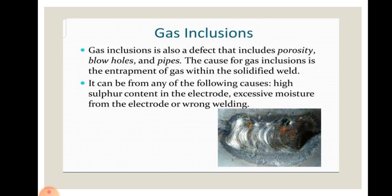The remedies are: first, clean the base metal properly; use proper electrodes; reduce welding speed to allow time for gases to escape; use filler metal having high content of deoxidizers; and use proper arc welding current and welding technique. These are the remedies for the gas inclusion welding defect.